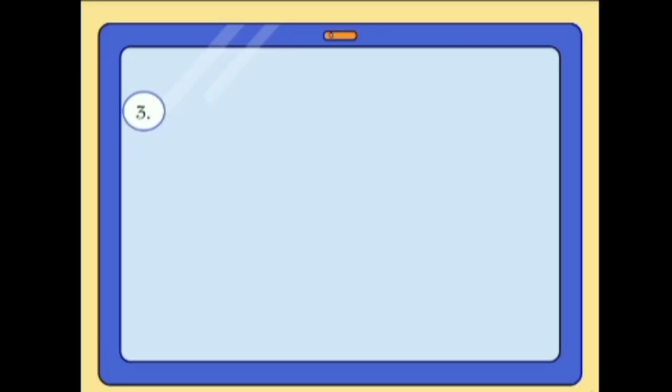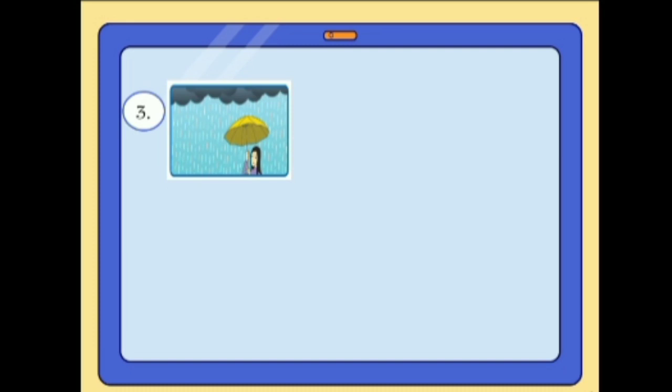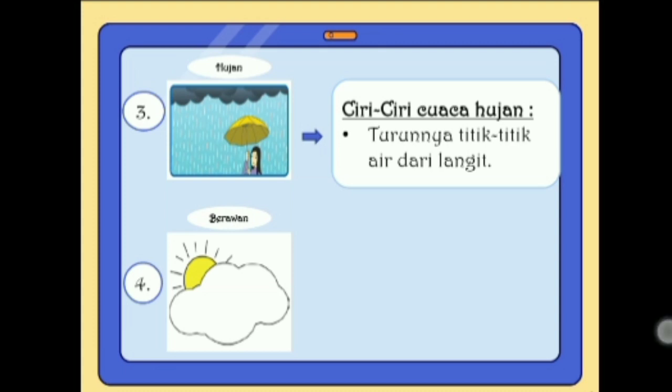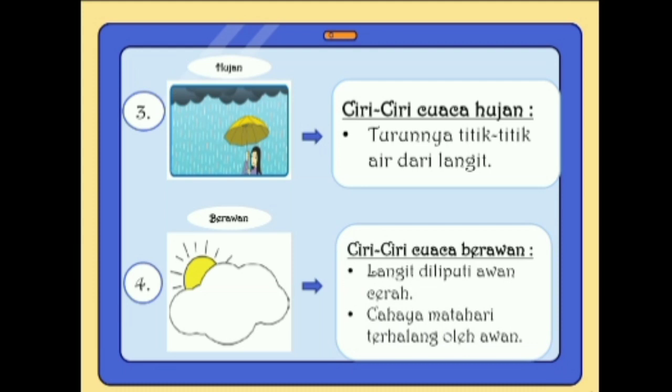Selanjutnya yang ketiga, perhatikan gambarnya ya teman-teman. Ini cuaca apa? Ya benar, hujan. Ciri-ciri cuaca hujan: turunnya titik-titik air dari langit. Kalau ini cuaca apa? Ya benar, ini cuaca berawan. Ciri-ciri cuaca berawan: langit diliputi awan cerah, cahaya matahari terhalang oleh awan. Jadi ada empat cuaca: cerah, berawan, mendung, dan hujan.